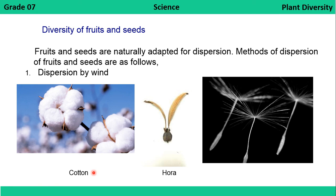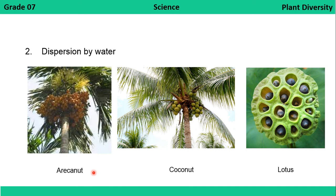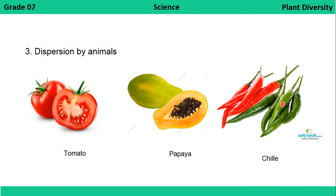The diversity of fruits and seeds helps in their dispersion. They are naturally adapted for dispersion, and the methods of dispersion differ according to their structure. Fruits and seeds dispersed by wind include those with wing-like structures. The second method is dispersion by water, with examples such as areca nut, coconut, and lotus. The third method is dispersion by animals, with examples including tomato, pepper, and chili.